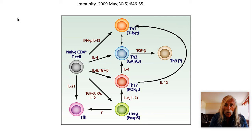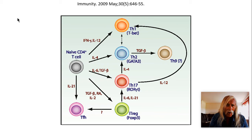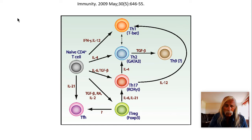Going from a T-reg — a suppressor cell — to a Th17 effector cell, and onward to a Th1, shows you that T-regulatory cells do not have one fixed family tree. When exposed to the right cytokine environment — interleukin-6 and 21 for Th17 conversion, and interleukin-12 for Th1 conversion — a T-regulatory cell, even if identified as such by flow cytometry, can actually turn into an effector cell in the right microenvironment.